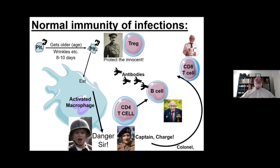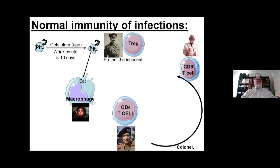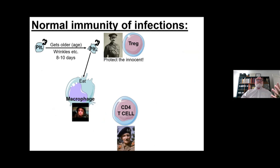Once the infection has been eliminated — and this occurs for really 99% of most infections — there's no more stimulus for the macrophages. They go back to a normal resting state and carry on eating older platelets. Because the stimulus of the macrophage has gone away, the T cell has become rested, the B cells go away so antibodies are not really being made anymore, and the CD8-positive T cells start to wane also, because there's no more stimulus for them.